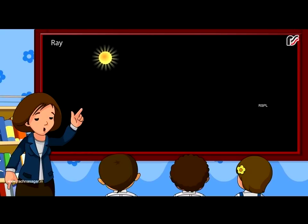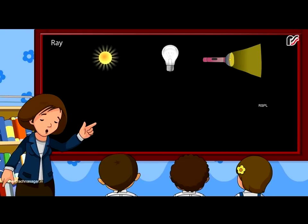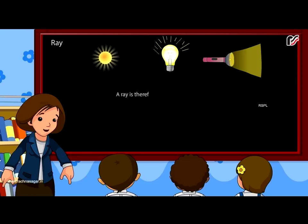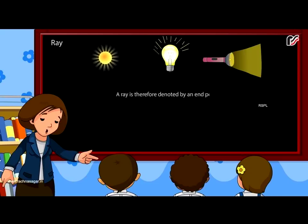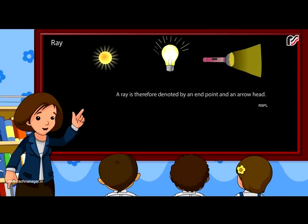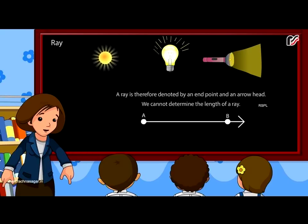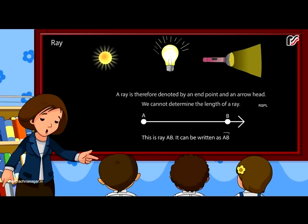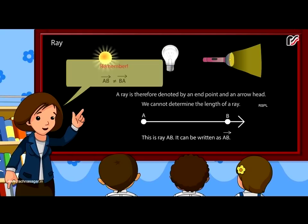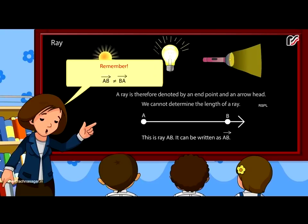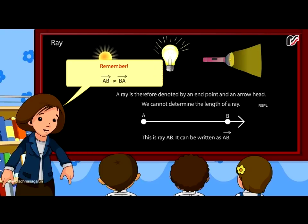Ray: Observe the sun, a torch and an electric bulb. Rays of light are given out from them. A ray is therefore denoted by an end point and an arrow head. We cannot determine the length of a ray. This is ray AB. It can be written as AB. Remember, ray AB is not equal to ray BA.